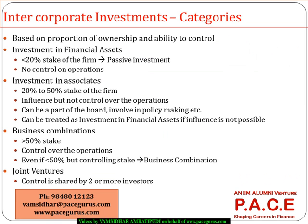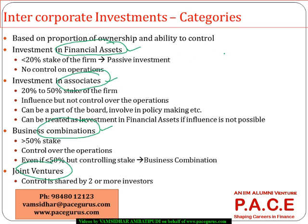The prime categories when it comes to intercorporate investments — how are they classified? Majorly, we see them classified into four categories: investments in financial assets, investment in associate firms, business combinations, and joint ventures. Whenever one company invests in another firm, that investment gets classified into one of these four categories.